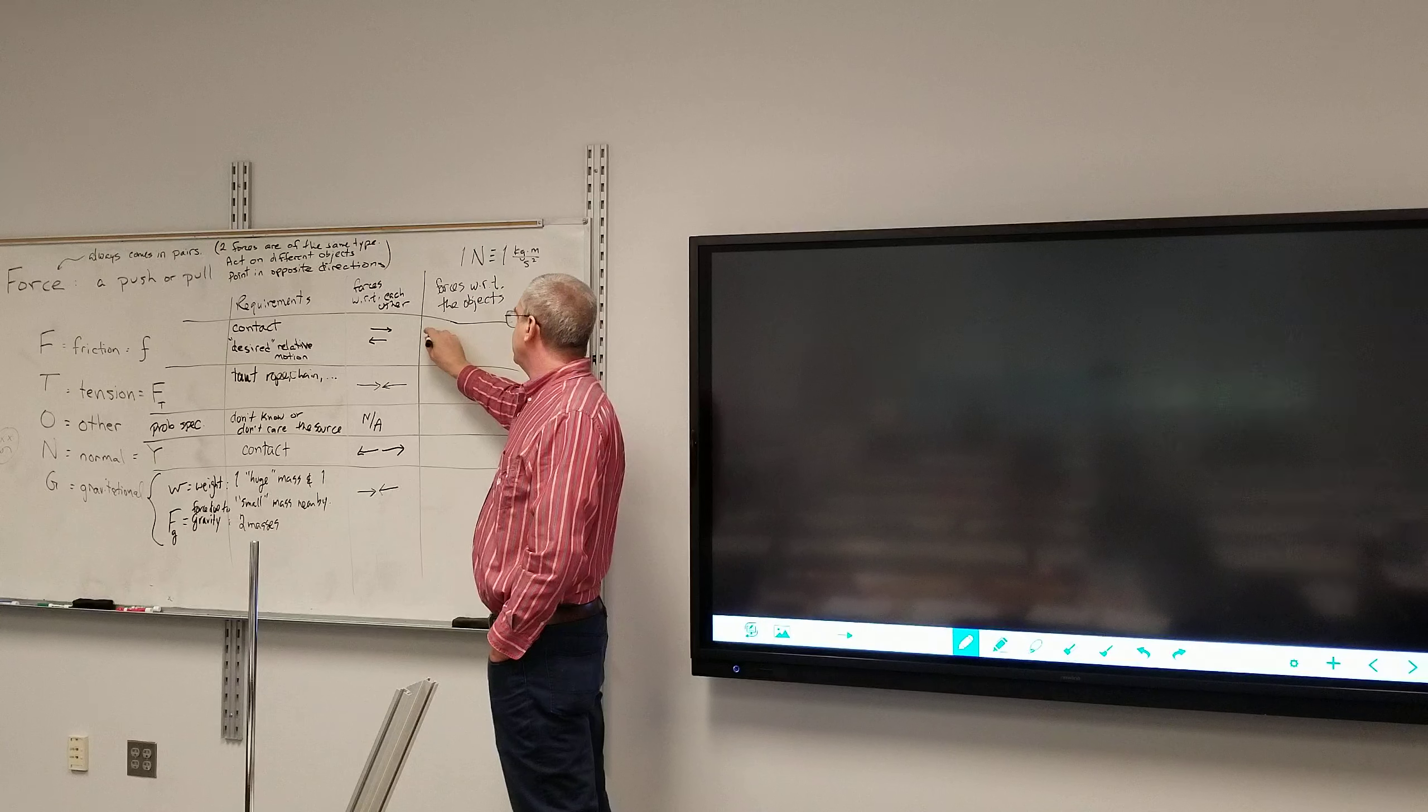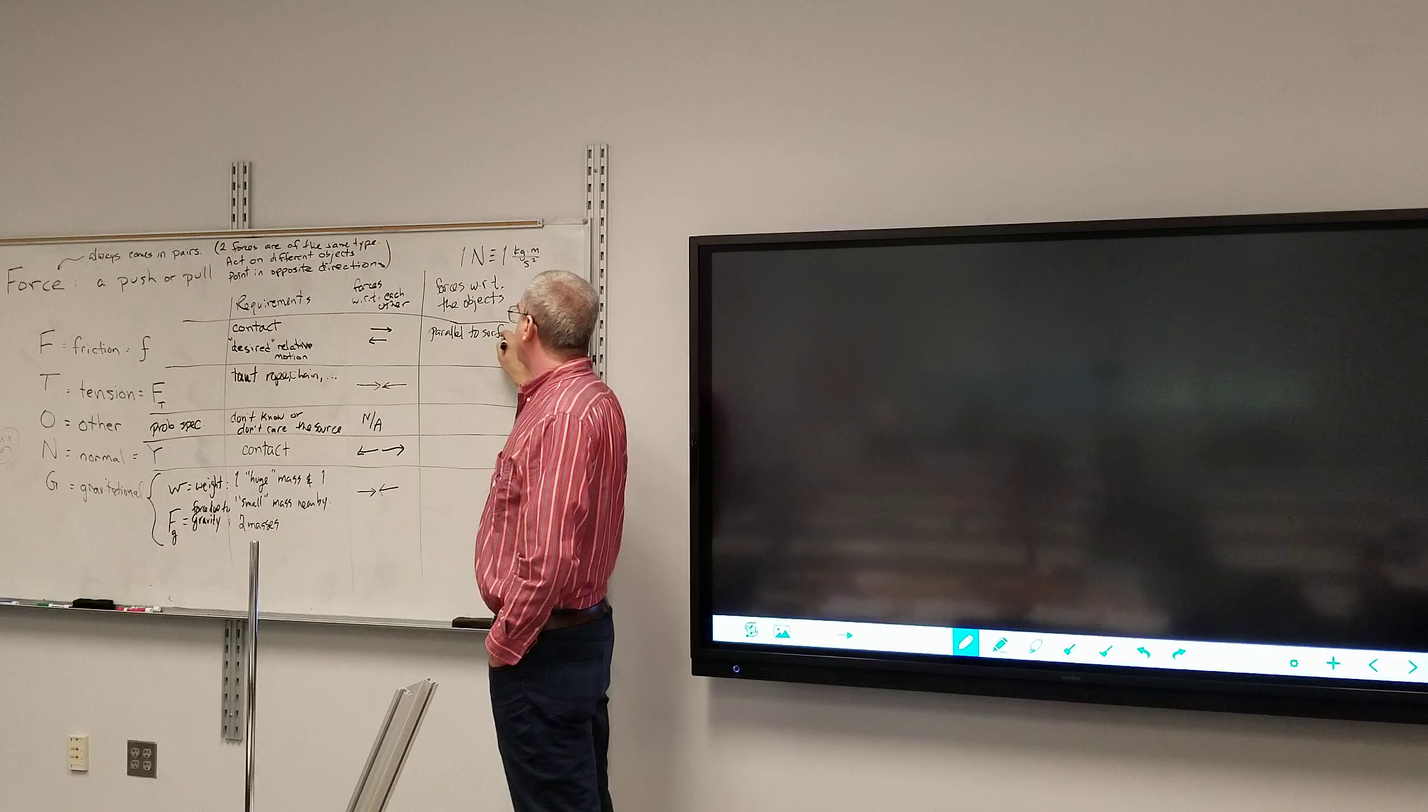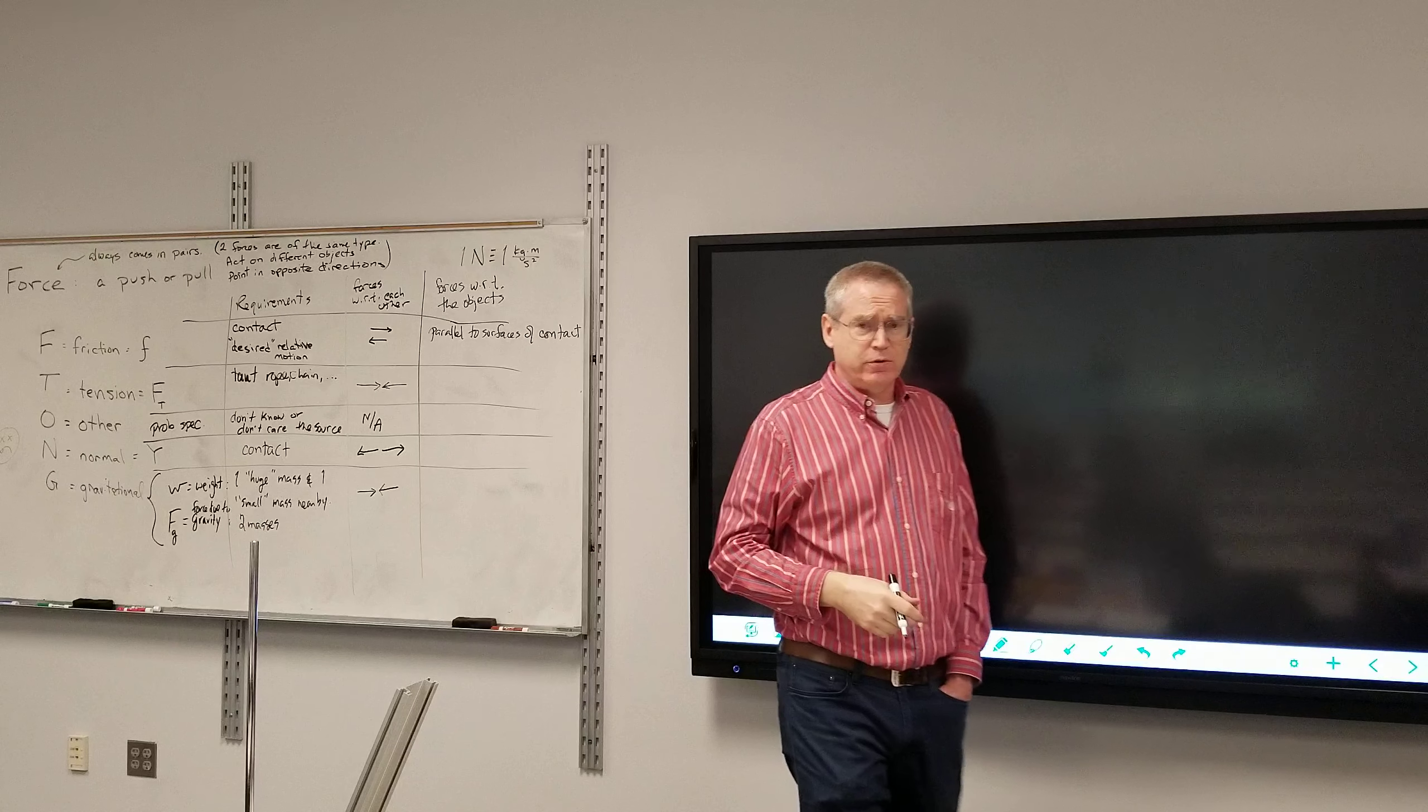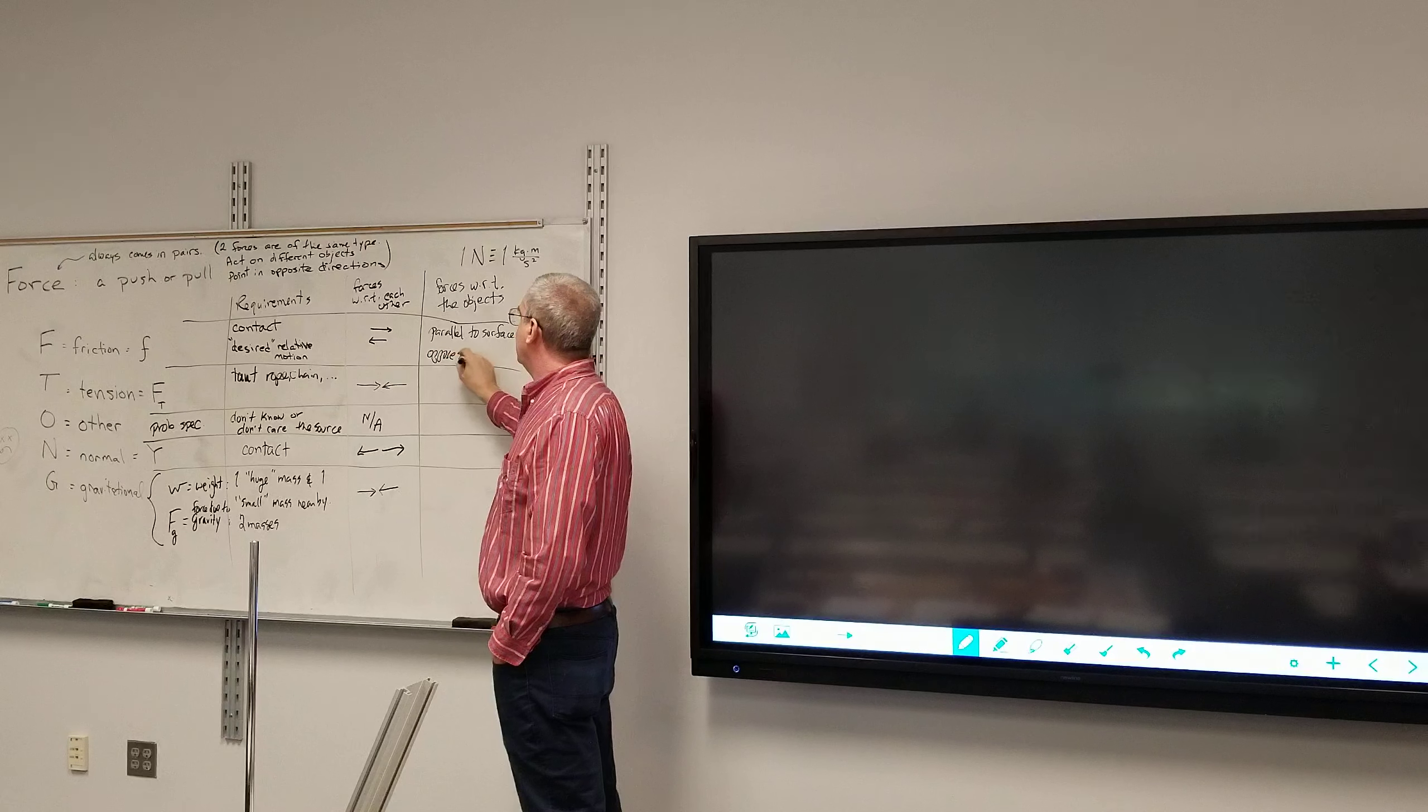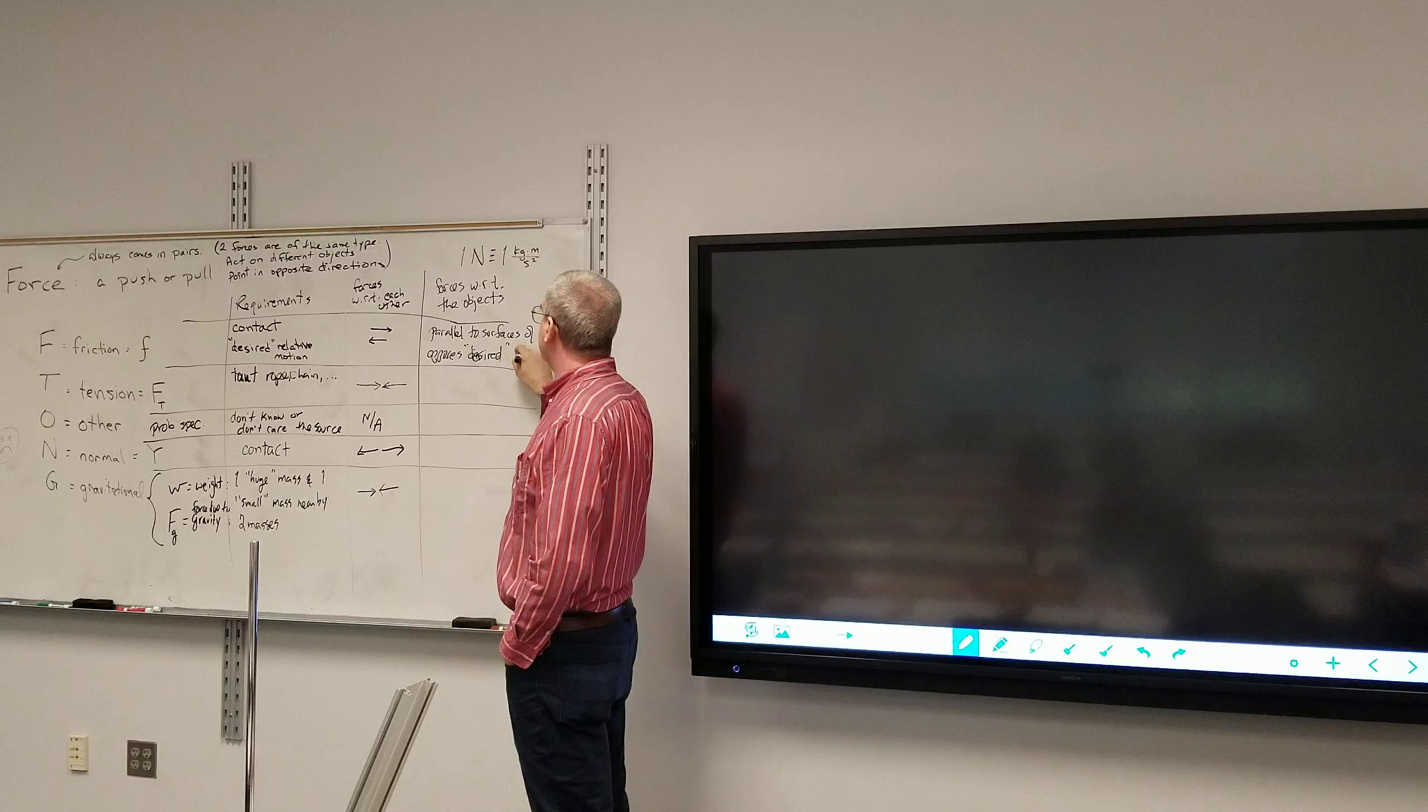Friction force is parallel to the surfaces of contact. And it does say surfaces of contact because it requires two objects. There's two surfaces that are touching. And it opposes desired relative motion.